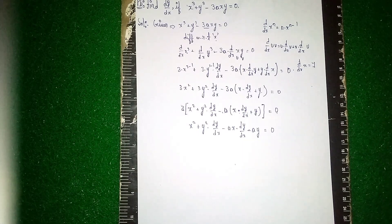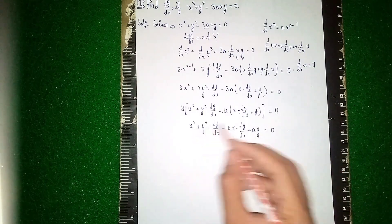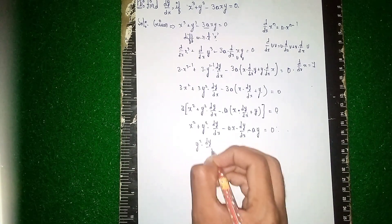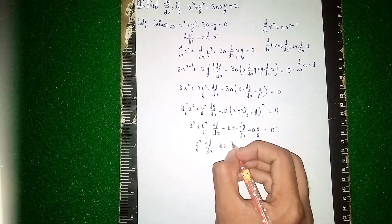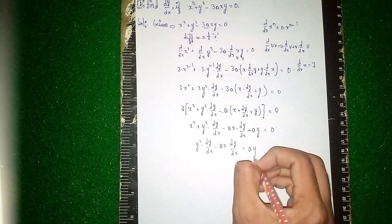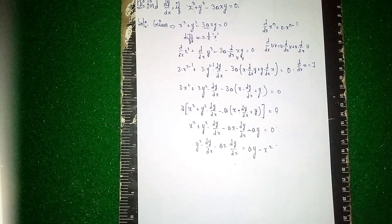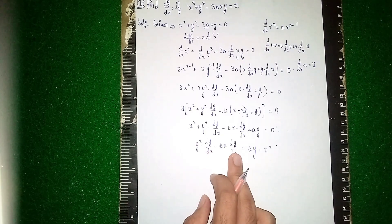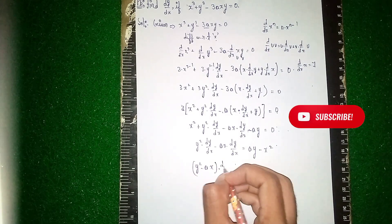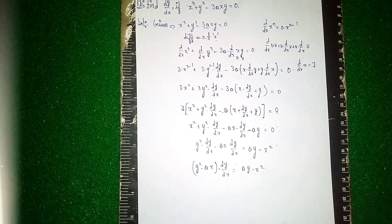Now sending -a·y and x² to the other side: y² · dy/dx - a·x · dy/dx = a·y - x². Taking dy/dx as common: (y² - ax) · dy/dx = ay - x².